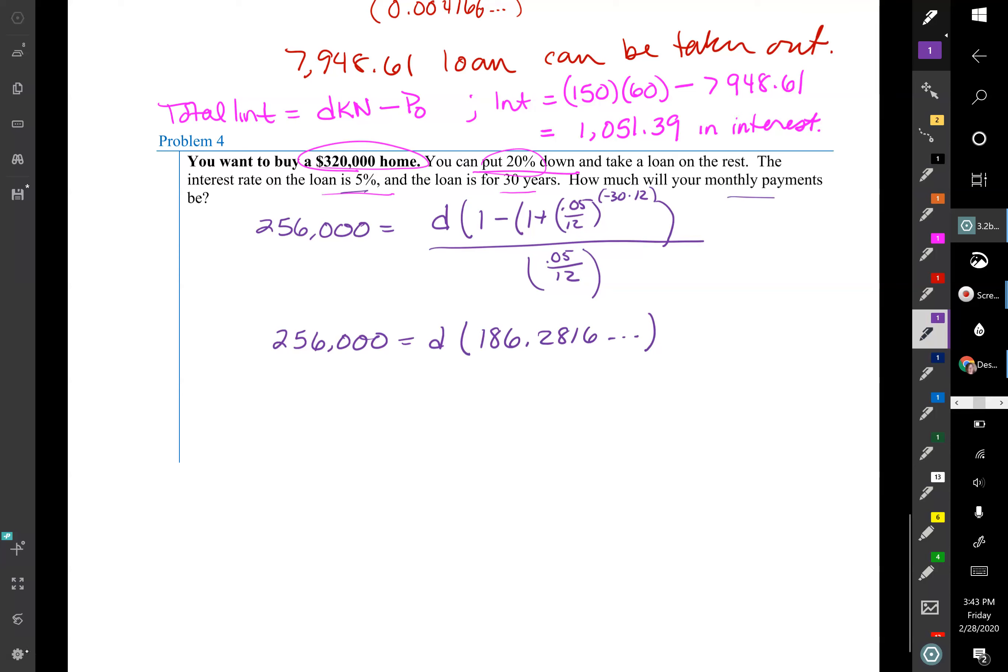And I hit the 256,000 divided by second answer is the route I'm gonna take with that. And I will get $1,374.26. So that's how much my payments are approximately. I mean there's some round off buildup even in a calculator that happens.